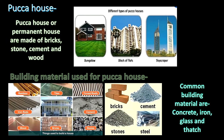Pukka houses are permanent houses. Bungalow, apartment, and skyscrapers are different types of pukka houses. Materials used for building a pukka house are bricks, stone, cement, and steel. Windows and doors are generally made of wood.